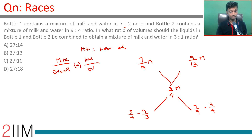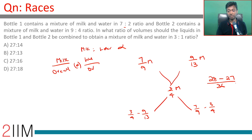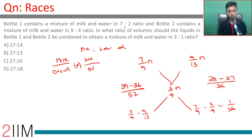Using the allegation method: one side is 7/9 minus 3/4, and the other is 3/4 minus 9/13. For 7/9 minus 3/4, the LCM of 9 and 4 is 36: that gives 28/36 minus 27/36 = 1/36. For 3/4 minus 9/13, the LCM of 4 and 13 is 52: that gives 39/52 minus 36/52 = 3/52.